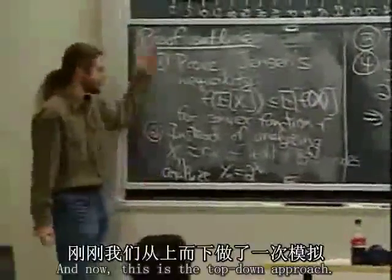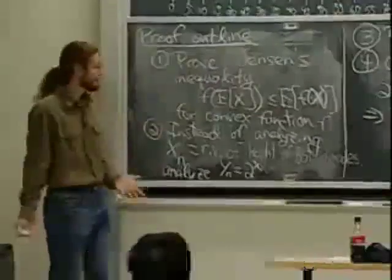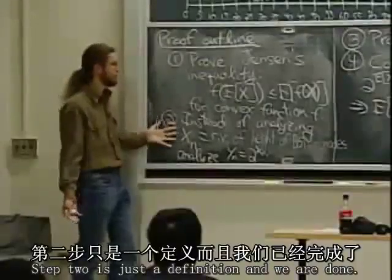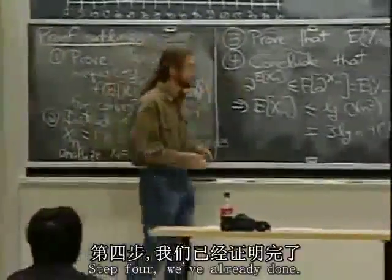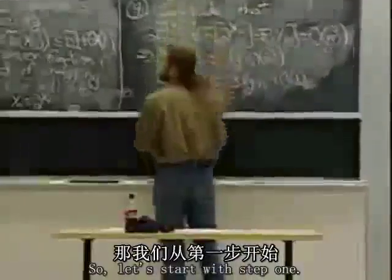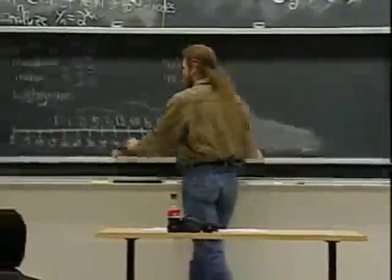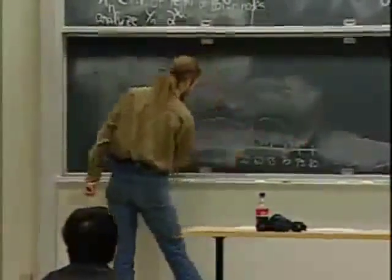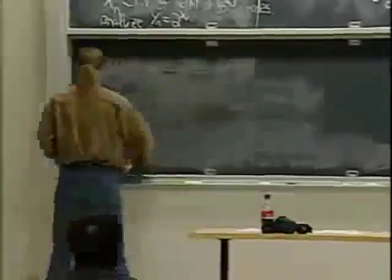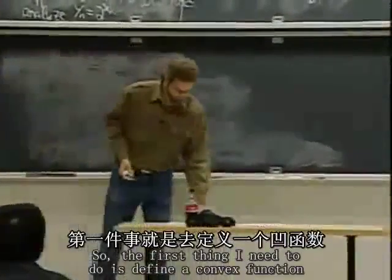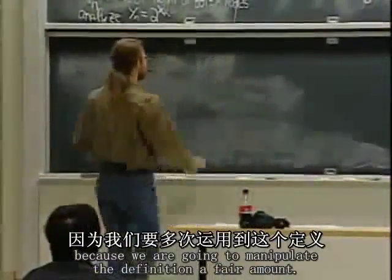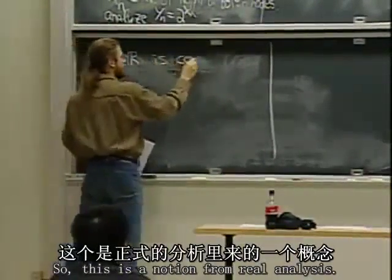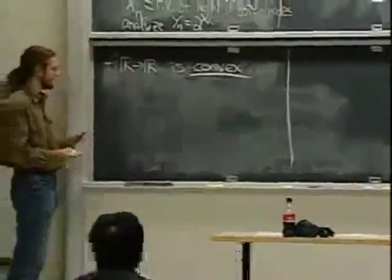You've now seen the end of the proof — that's the foreshadowing, the top-down approach. You see what the steps are; now we just have to do them. Step 1 takes a bit of work but uses basic stuff. Step 2 is just the definition. Step 3 is probably the hardest part. Step 4 we've already done. Let's start with step 1: proving Jensen's inequality. First I need to define a convex function.